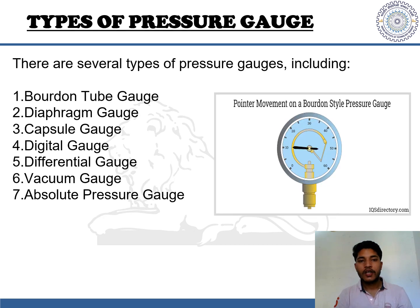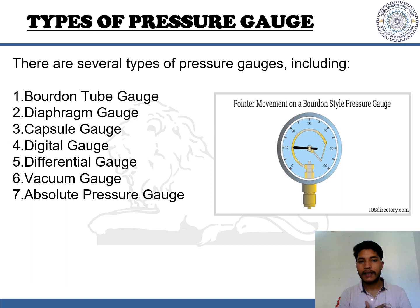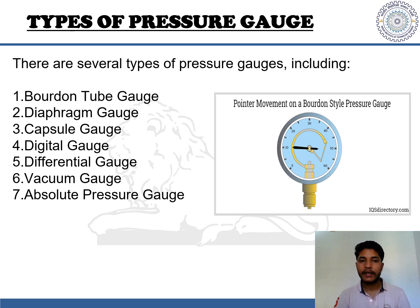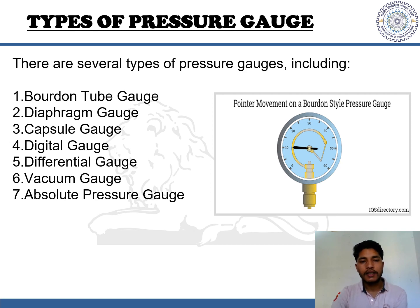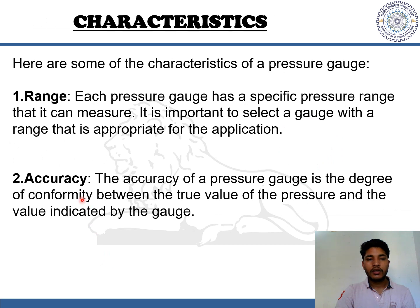Moving on, we will see the different types of pressure gauges. There are several types, which include Bourdon tube, diaphragm gauge, capsule gauge, digital gauge, differential gauge, vacuum gauge, and absolute pressure gauge.